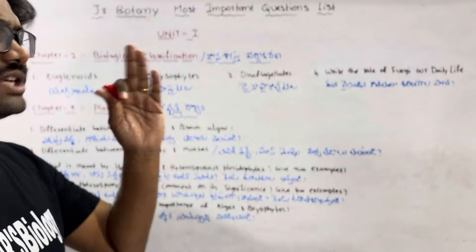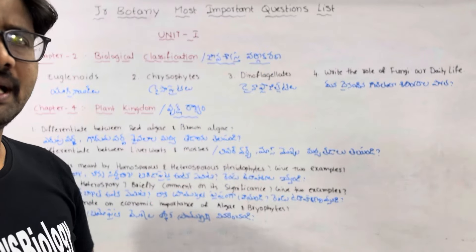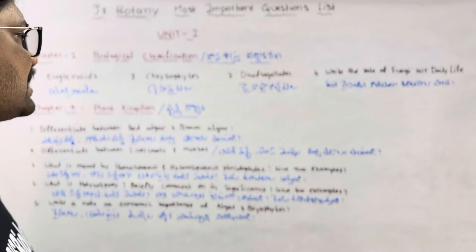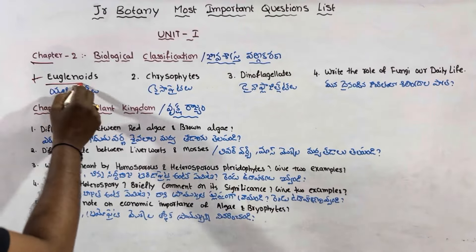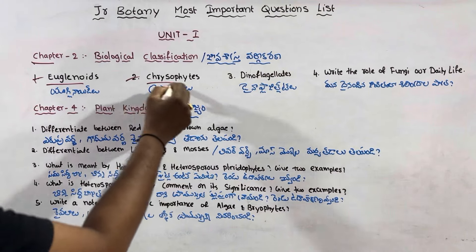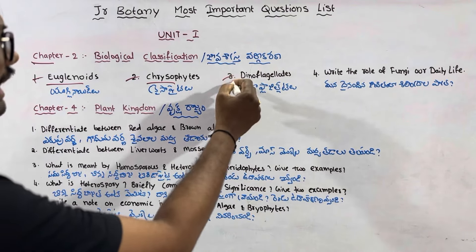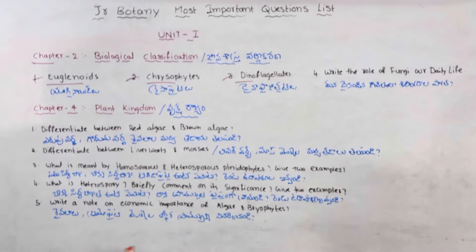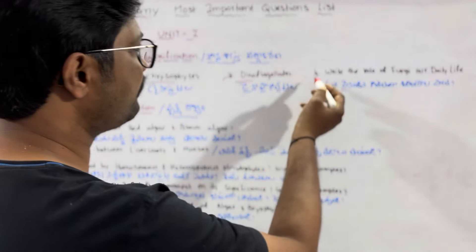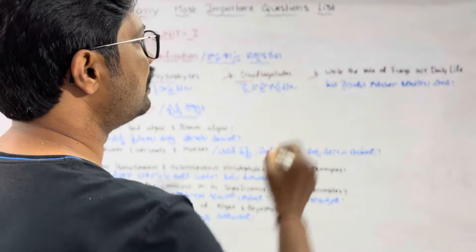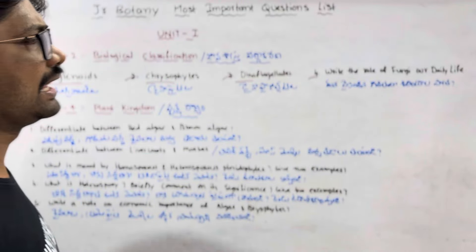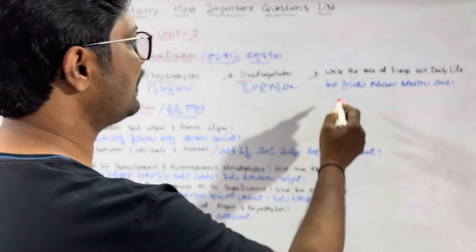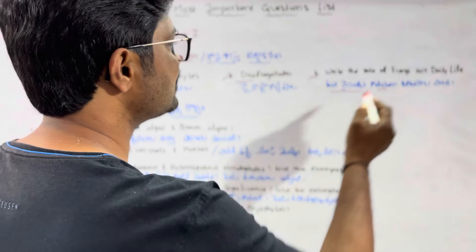For the four marks questions in Chapter 2, you will be tested on all the four marks topics. The important topics include Euglenoids, Chrysophyids, Dinoflagellates, and writing the role of Fungi. These are the key four marks questions for this chapter.